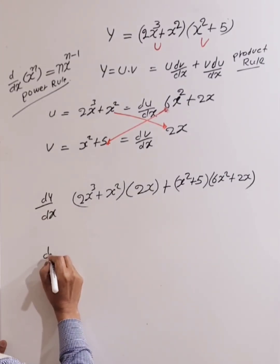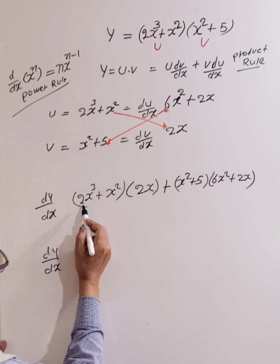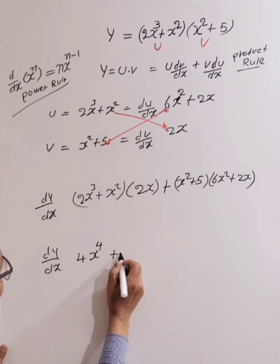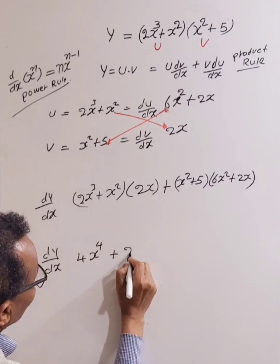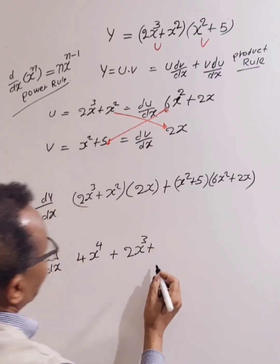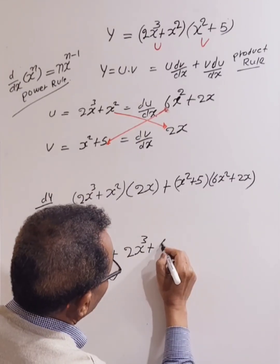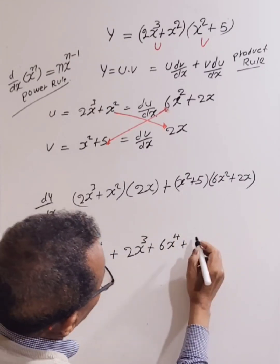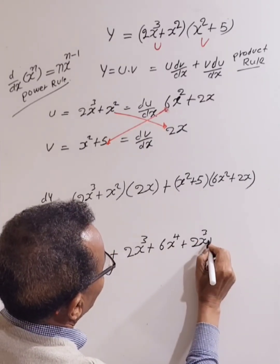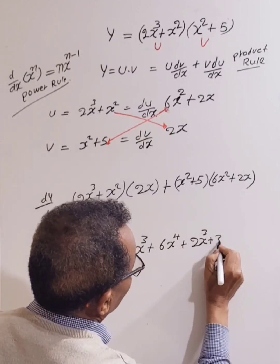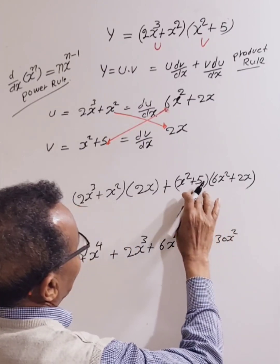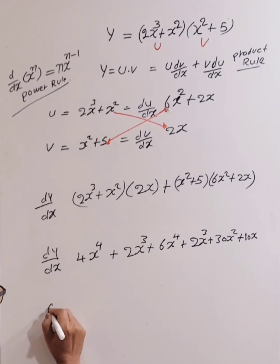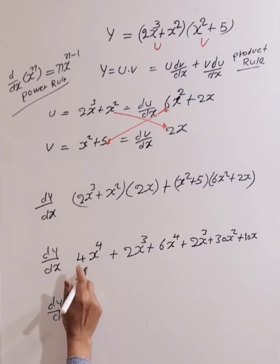Expanding: 2x cubed times 2x gives 4x to the power 4. x squared times 2x gives 2x cubed. Then x squared times 3x squared gives 3x to the power 4. Plus x squared times 2x gives 2x cubed. Then 5 times 3x squared gives 30x squared, and 5 times 2x gives 10x. Now let's collect like terms.